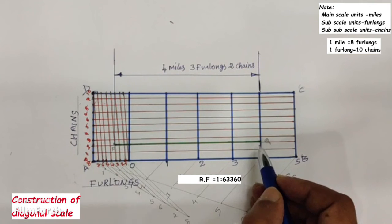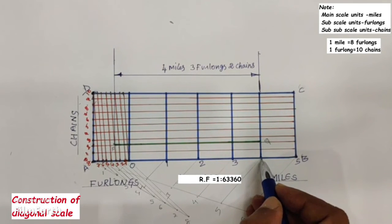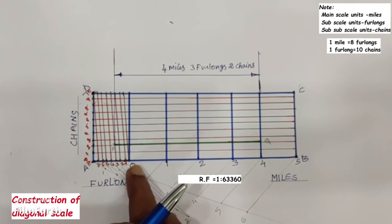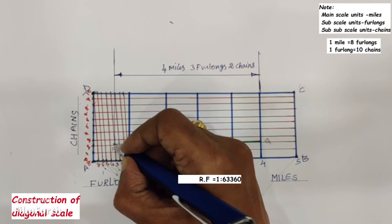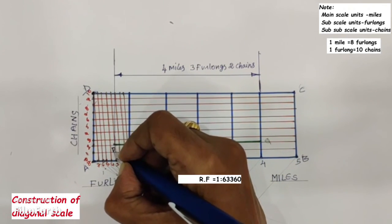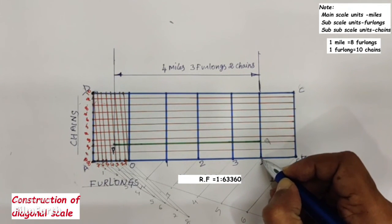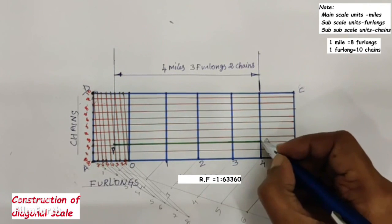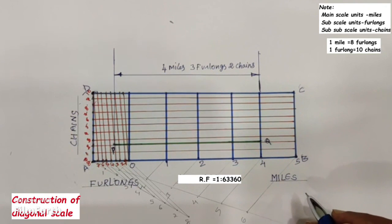This PQ length represents 4 miles, 3 furlongs, and 2 chains. From 0 rightward, take 4 divisions representing 4 miles. From 0 leftward, take 3 divisions for furlongs. Along the diagonal line up to the second division, mark point P. Parallel to AB, passing through P, draw a horizontal line that cuts the perpendicular drawn from the fourth division at point Q. Then PQ represents 4 miles, 3 furlongs, and 2 chains. Note: all units are to be written in capital letters. This problem is very important and has been asked many times in university examinations.